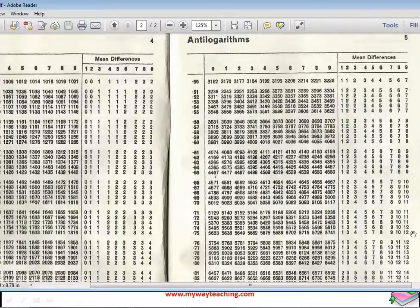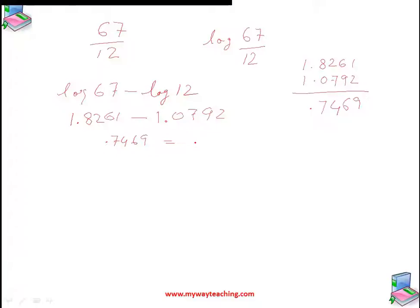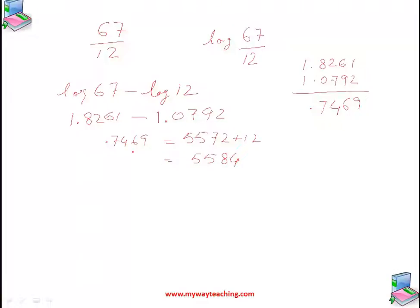The value from the table is 5572, and the mean difference for 9 is 12. So 5572 plus 12 is 5584. The characteristic of our result is 0. When we go for the antilog, we take 0 plus 1, so we place the decimal after one digit from the left, giving the answer 5.584.